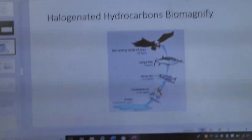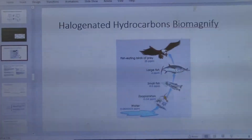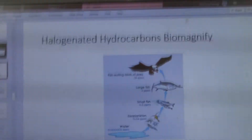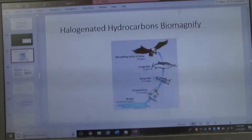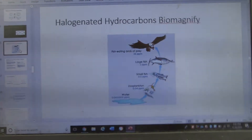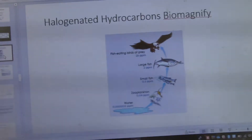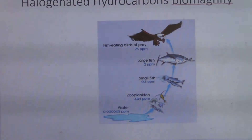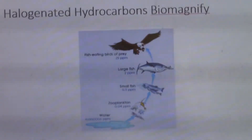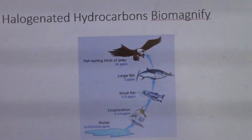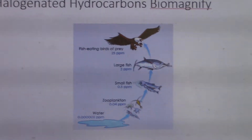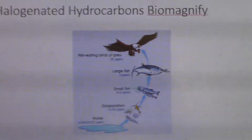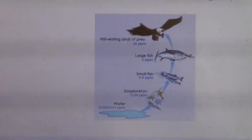I'm going to keep plugging away on this lecture about halogenated hydrocarbons. I was just talking about biomagnification. Biomagnification is the increase in concentration of pollutants in an environment up the food chain.